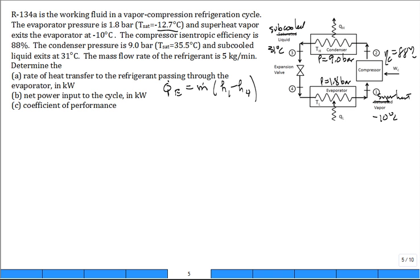What is the net power to the cycle? That's going to be to run the compressor. That's going to be the mass flow rate times H2 minus H1.